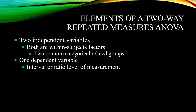With the two-way repeated measures ANOVA, you also have one dependent variable. In the example I'm using, this was the instrument used to measure relaxation level — the level of relaxation would be the dependent variable. The dependent variable for a two-way repeated measures ANOVA needs to be measured at the interval or ratio level of measurement.